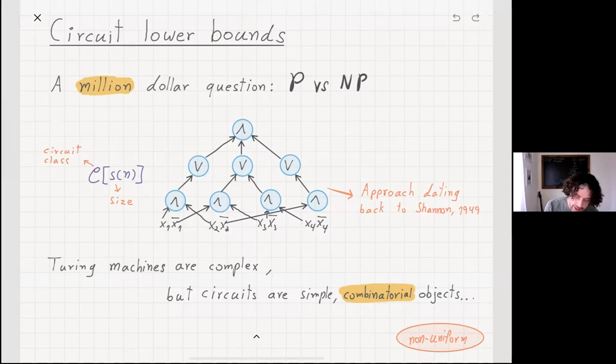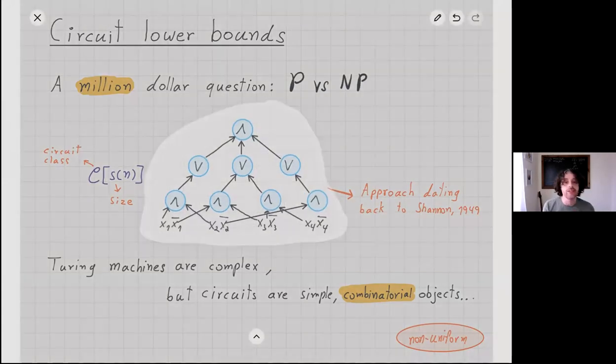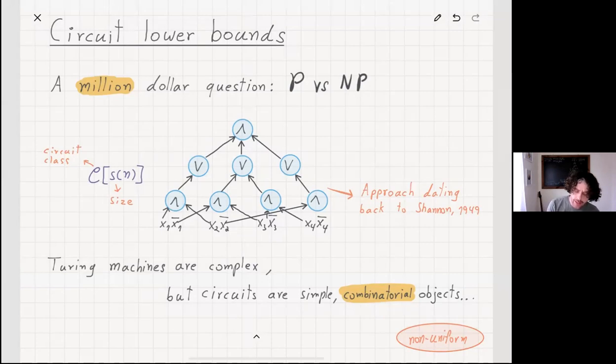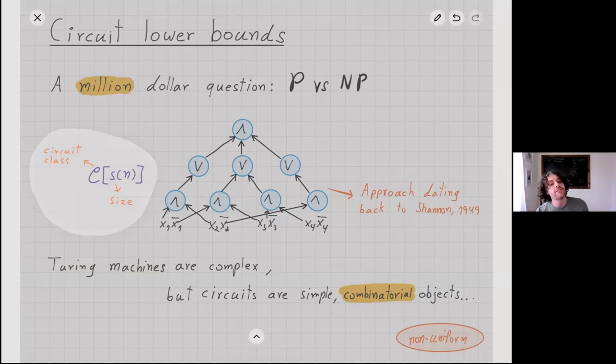In this setting, the main object of computation is a circuit. We have some inputs, say x1 to xn, and we wire them into gates like NOT, OR, AND, and so forth. It would be useful to introduce this notation, where by C, fancy script C, I'll talk about a circuit class, and sn would be the size, for example, the number of gates as a function of the number of variables.